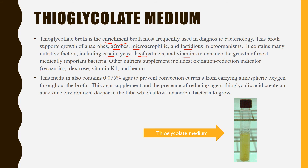Other nutrient supplements include the oxidation-reduction indicator resazurin, dextrose, vitamin K1, and haemin. Most components are almost the same as in Robertson Cooked Meat medium. This medium also contains 0.075% agar to prevent convection currents from carrying atmospheric oxygen throughout the broth. The agar supplement and the presence of the reducing agent thioglycolic acid create an anaerobic environment deeper in the tube, which allows anaerobic bacteria to grow.